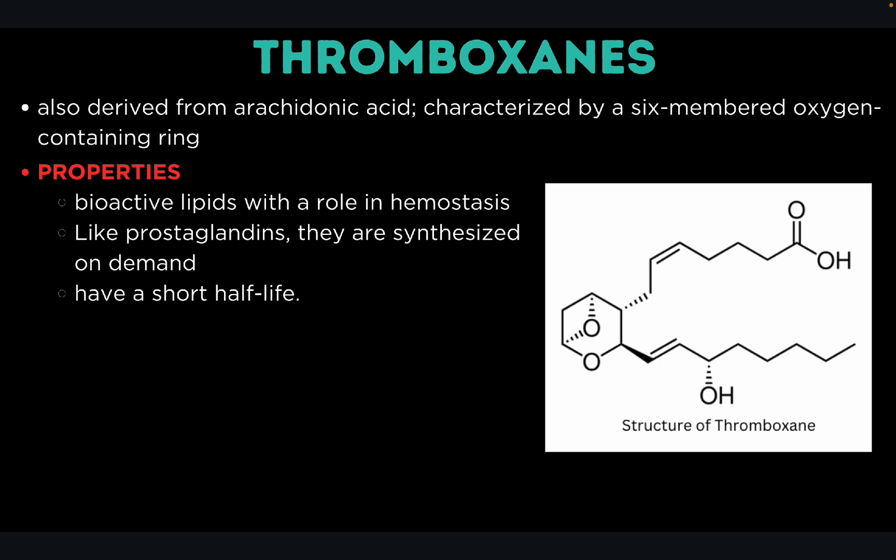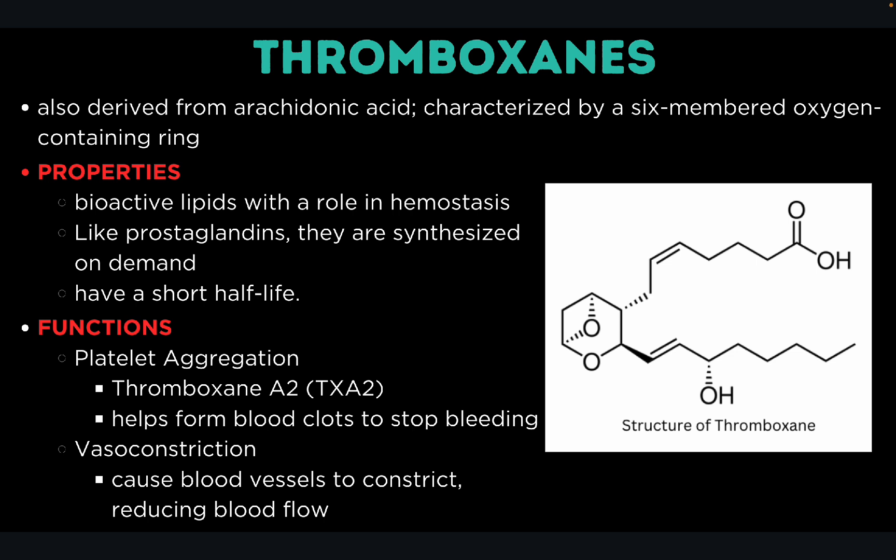Thromboxanes are also derived from arachidonic acid through the COX pathway, similar to prostaglandins. They are characterized by a six-membered oxygen-containing ring. They are bioactive lipids with a role in hemostasis — the process that stops bleeding — and are synthesized on demand with a short half-life. Thromboxanes function in platelet aggregation and vasoconstriction. Thromboxane A2 (TXA2) is the most well-known and is crucial in promoting platelet aggregation to form blood clots to stop bleeding. Thromboxanes also cause blood vessels to constrict, reducing blood flow and helping prevent blood loss after an injury.